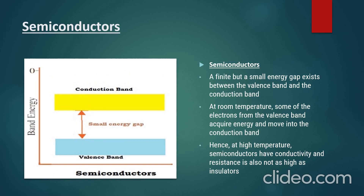For semiconductors, there is a finite but small energy gap between the valence band and the conduction band. At room temperature, some of the electrons acquire energy and move to the conduction band, giving some small conductivity — but not more than conductors. At higher temperature, they show higher conductivity as more electrons can move, but their conductivity always lies between conductors and insulators. Their resistance is also not as high as an insulator. So they lie as intermediate between conductors and insulators.